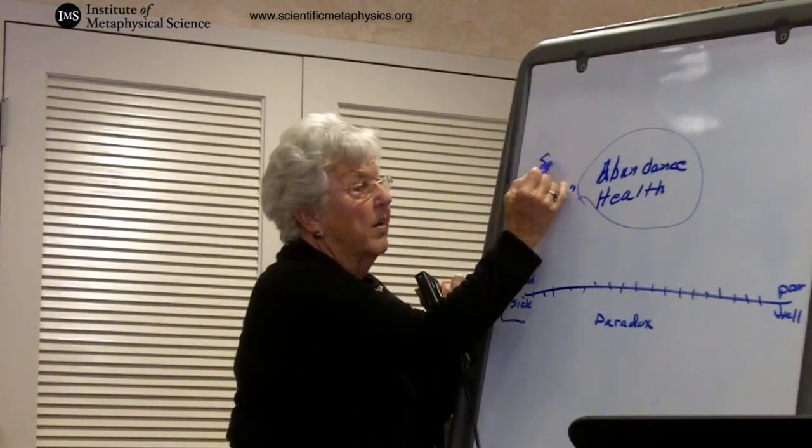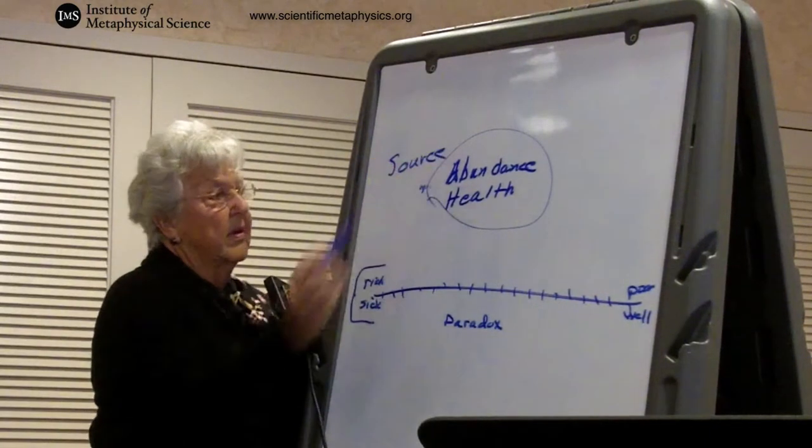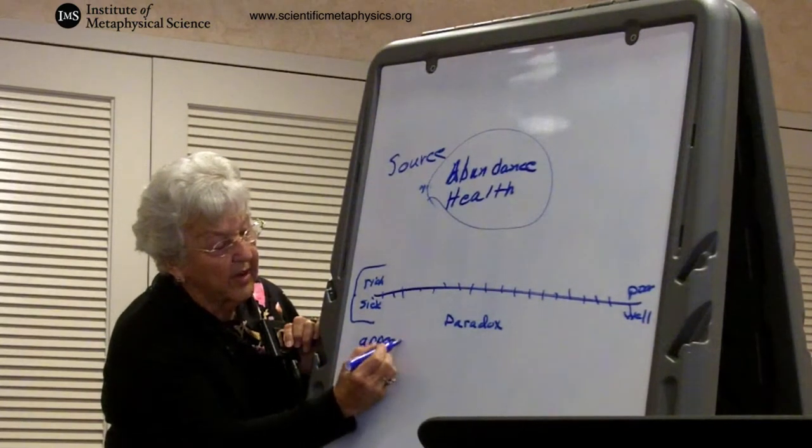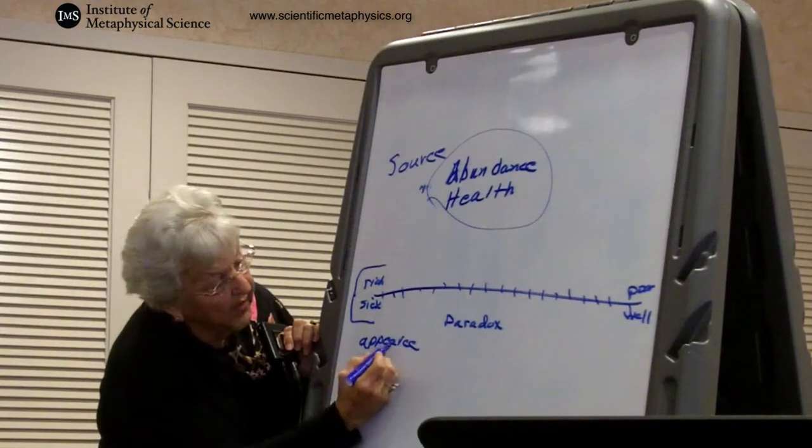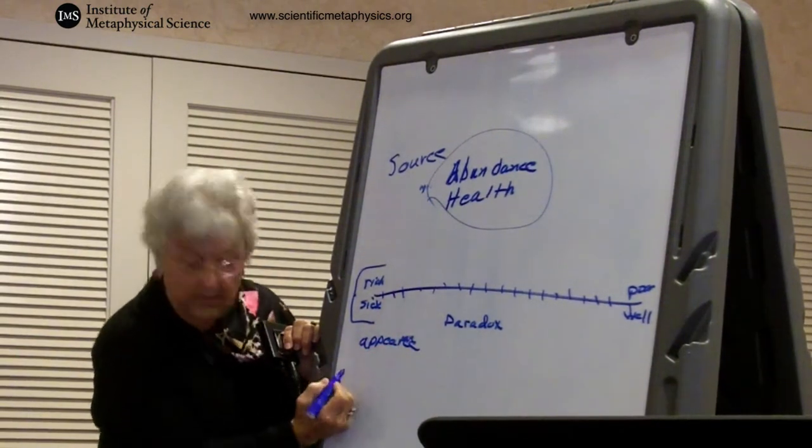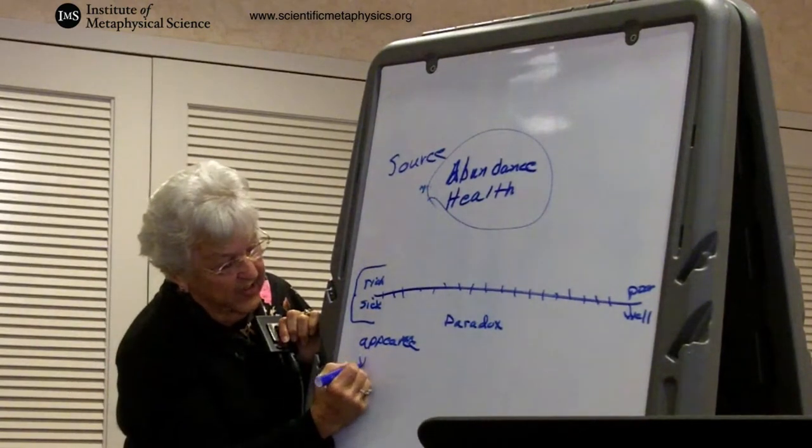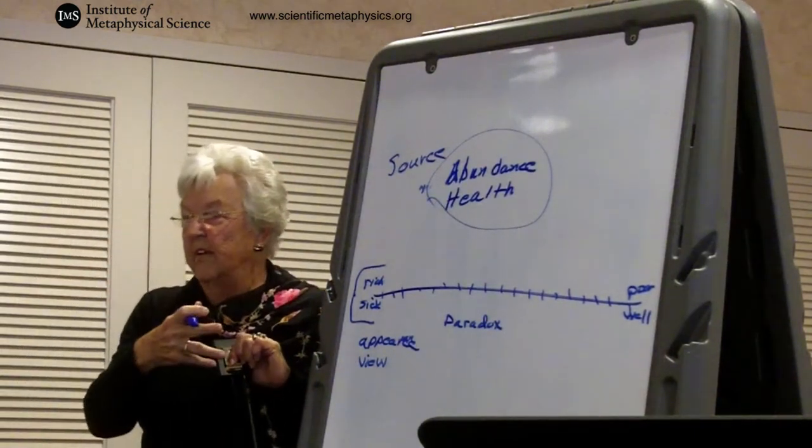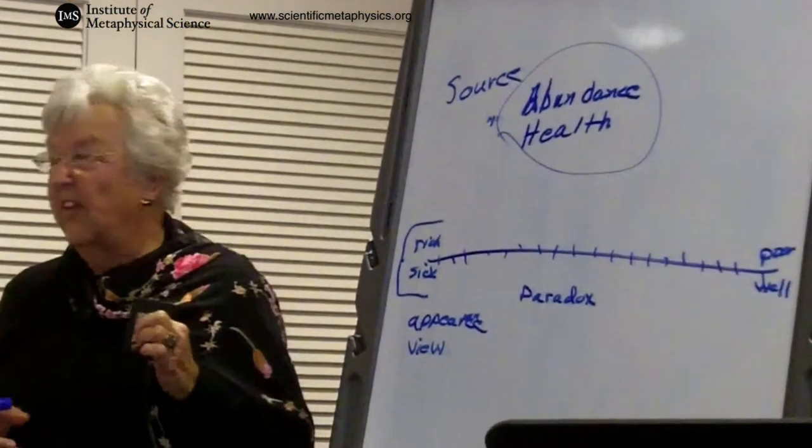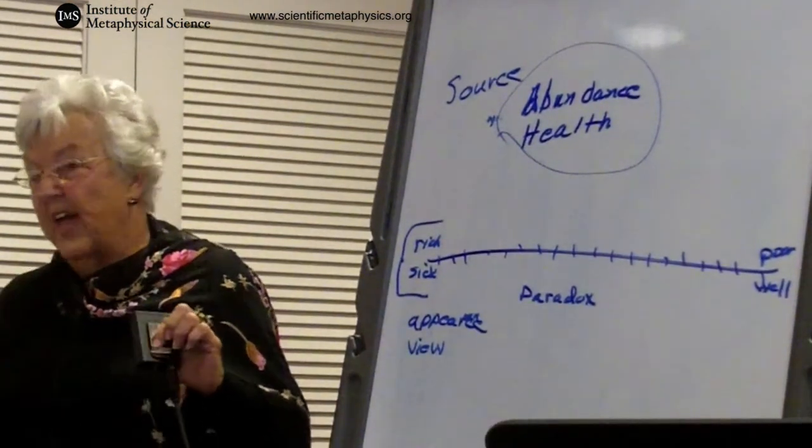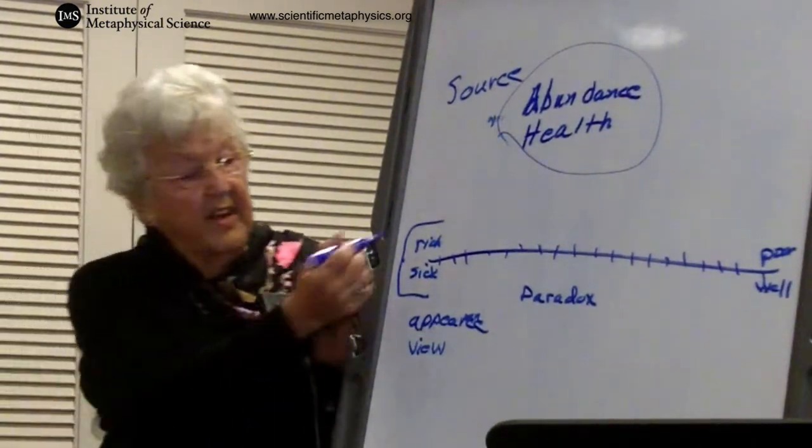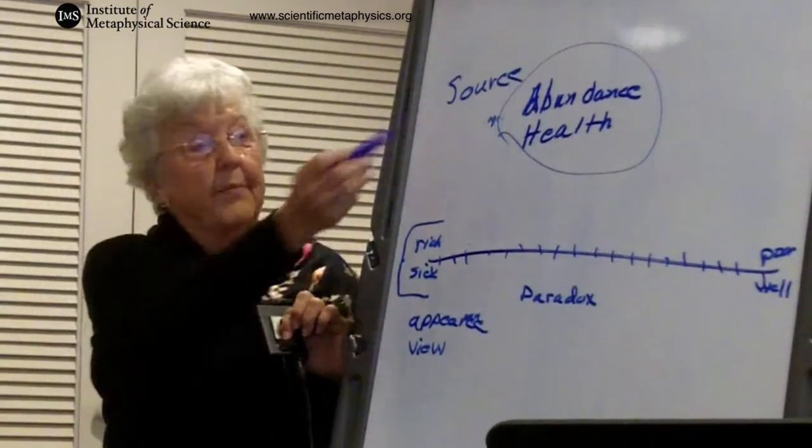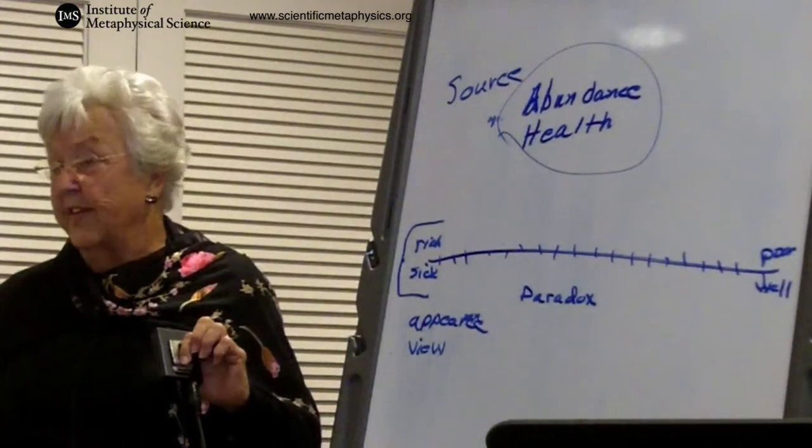This area up here we call source. This area down here is the appearance, the look, the concept. This is the view. Now really take a look. Everything that I encounter all the time, wherever I am, walking the streets as Betty, is in here. And it's only possible for it to be here because being is here, because source is present and active.